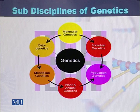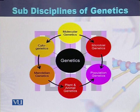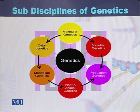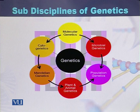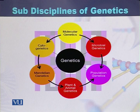Those geneticists that classify genetics into many sub-disciplines include: molecular genetics, which deals with genetics at the molecular level; cytogenetics, where we study genetics through chromosomes and the banding pattern of the chromosomes; and Mendelian genetics, where one studies all those laws that were developed by Gregor Mendel — the laws of heredity.